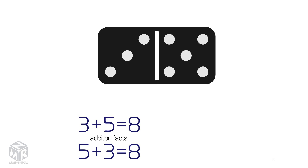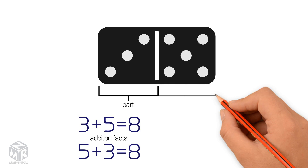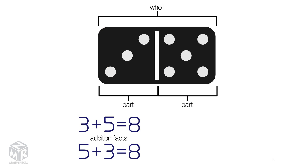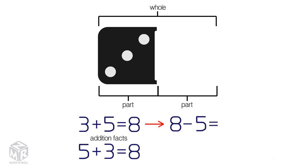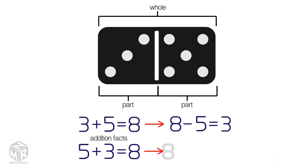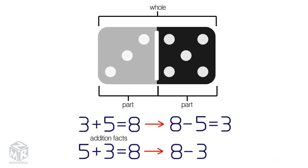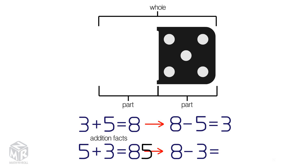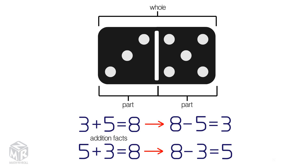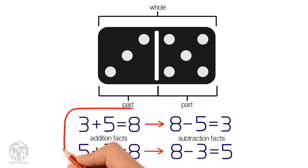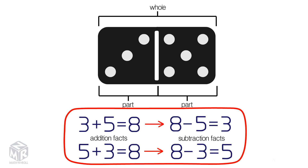Subtraction is the opposite of addition. We can subtract one part from the whole to get the other part. 8 minus 5 equals 3, and 8 minus 3 equals 5. These are the subtraction facts. These two addition facts and two subtraction facts make a fact family.